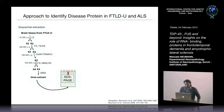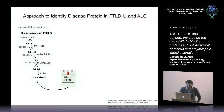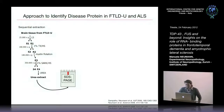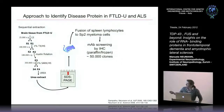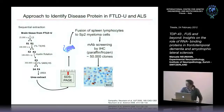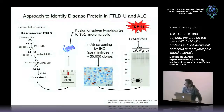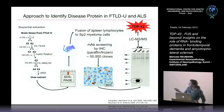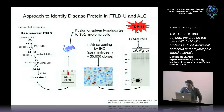Briefly, how we identified TDP-43: we performed a sequential extraction protocol starting from brain material from a patient with this disease. We enriched for highly insoluble proteins, loaded that on a gel, and used the high molecular material to immunize mice. These mice were used to generate monoclonal antibodies, screened by histology to identify those recognizing the inclusions. Biochemical analysis identified bands around 25 kDa, which by mass spectrometry turned out to be a part of TDP-43.